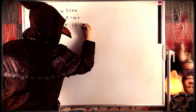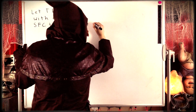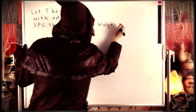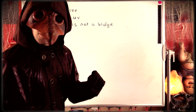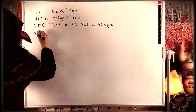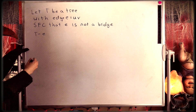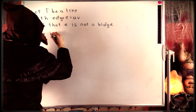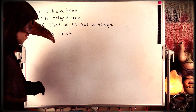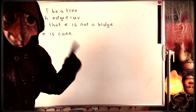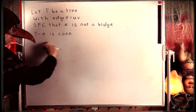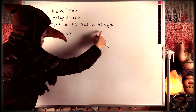Suppose that E is not a bridge. This means we can delete E from our tree and still have a connected graph. By definition of bridge, if we delete the edge E from T, we will have a connected graph. If we delete this edge that isn't a bridge from our tree graph T, the resulting graph has to be connected because E is not a bridge.